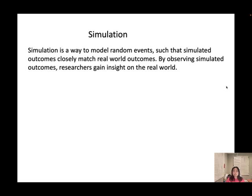Simulation is a way to model random events such that simulated outcomes closely match real-world outcomes. By observing simulation outcomes, we gain insights on the real world. What simulation means is we try to perform the experiment — we draw a sample from the population, we calculate it, and we observe the outcomes. Then you will have an idea of what the population is.